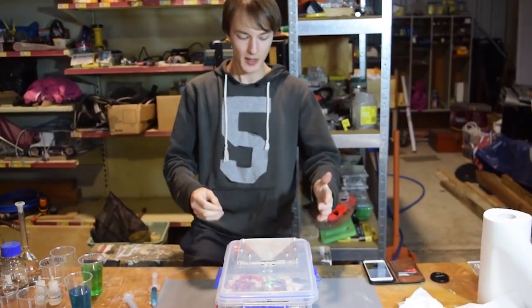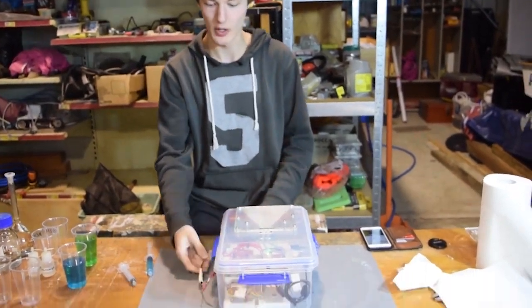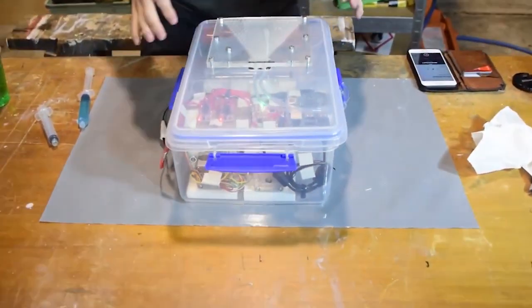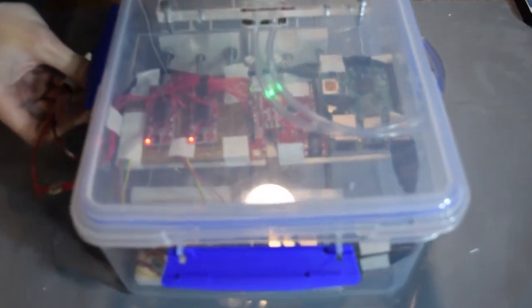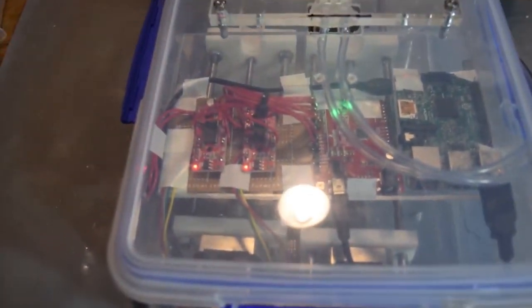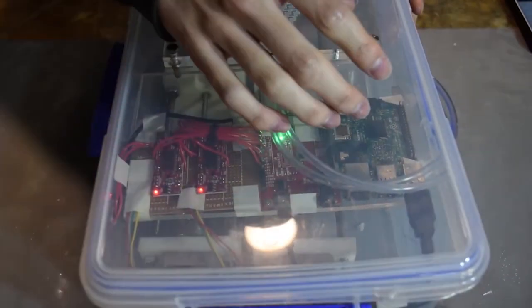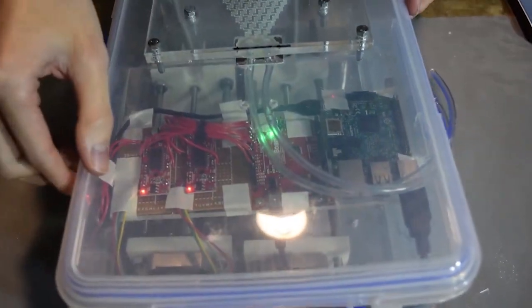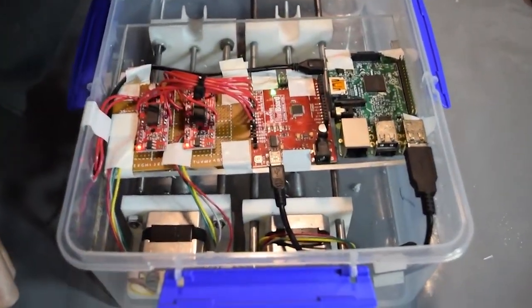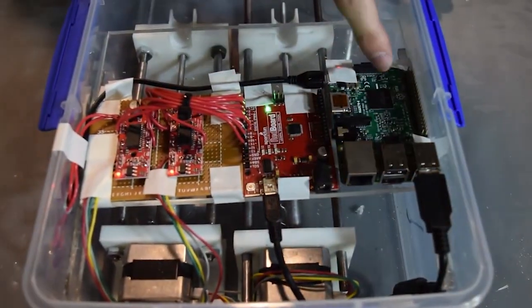All right, so to explain how all this works, we'll go over each of the parts that we've got here. We've got all of our power lines coming in from the side here. If I take the lid off for now, we have a Raspberry Pi,